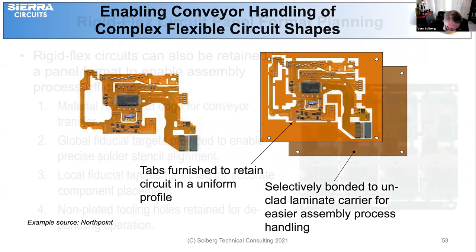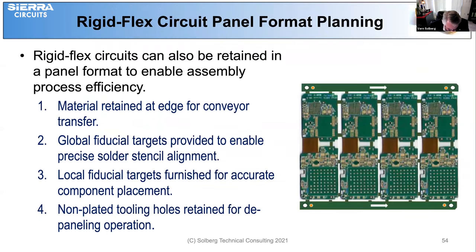Retaining several individual circuit units in an FR4 backing enables efficient transfer of the circuit units by conveyor from one machine to the other. The panel will require locating global fiducial targets near the panel edge to facilitate precise central alignment for printing the solder paste onto the land pattern.